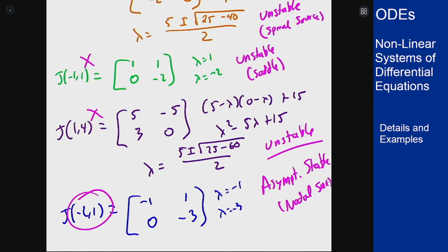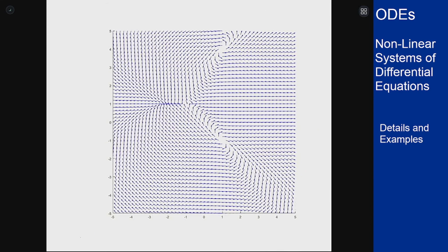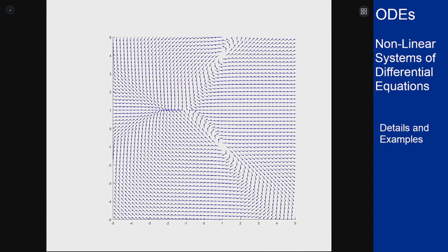We can also see this by looking at a slope field for this system. So on this, we can see all of our equilibrium solutions. We had 1 comma minus 1, it acted like a spiral source, which is what this looks like around this point here. We also had 1 comma 4, that was also a spiral source, which again is what it looks like around this point here.